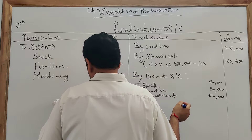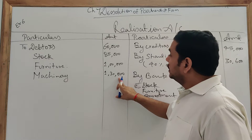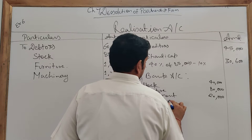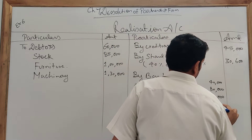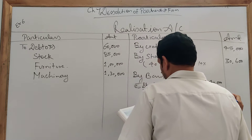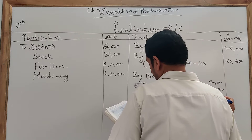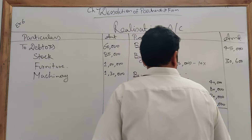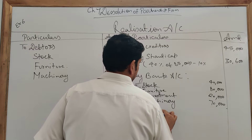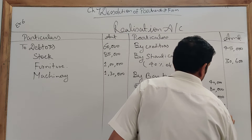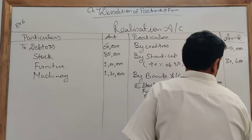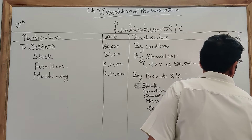Machine 3 was sold at a loss of 60,000. The book value of the machine is 1,68,000 and it is sold at a loss of 60,000, meaning machine 3 will realize about 1,08,000. Debtors realized 55,000. The total on the credit side of the realization account comes to 2,65,000.